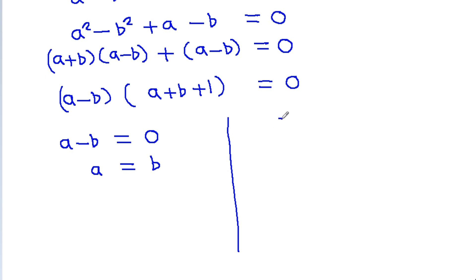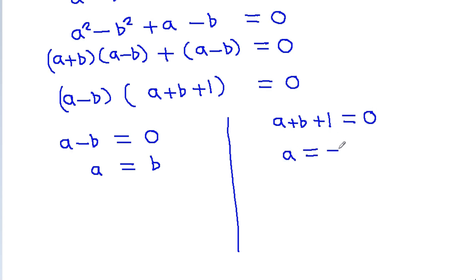Or a plus b plus 1 can be equal to 0, which gives us a is equal to minus b minus 1.